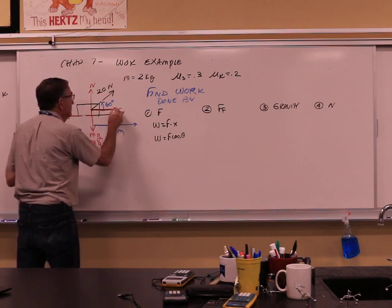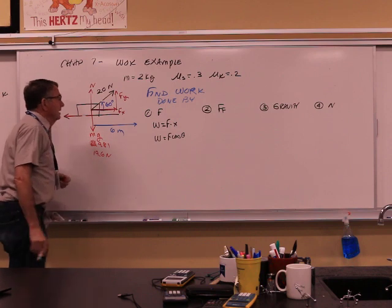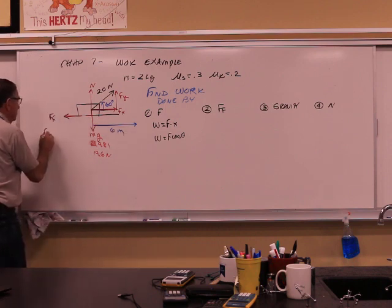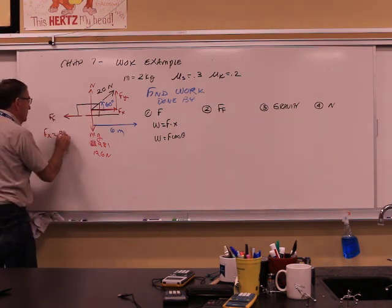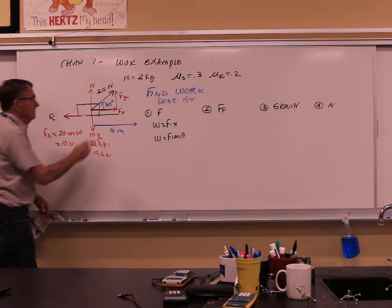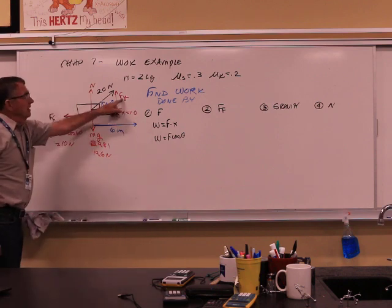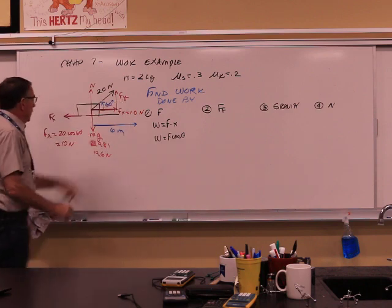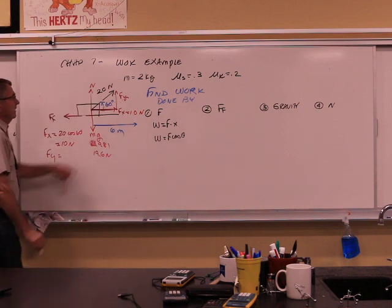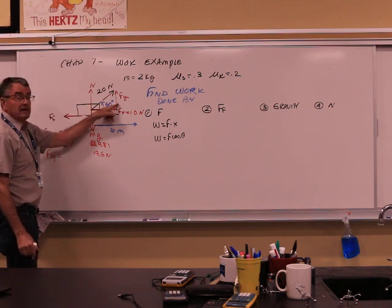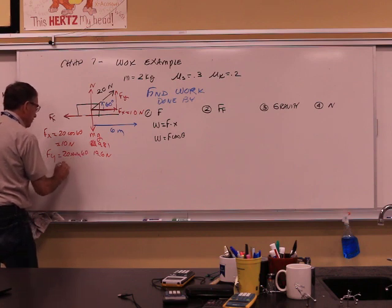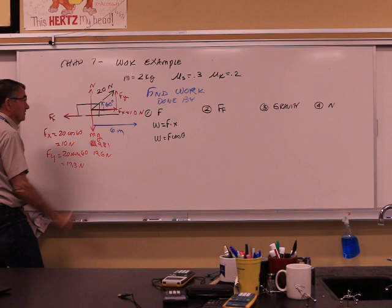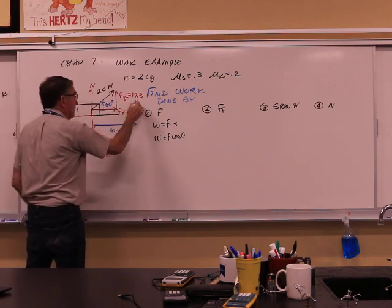Draw your components in. There's Fx, there's Fy. Let's compute these. Fx — the angle is there, and that side is adjacent to the angle, so adjacent uses cosine. So we have 20 cosine 60, which is 10 newtons. Then Fy is opposite the angle — opposite uses sine — so it's 20 sine 60, which is 17.3 newtons.